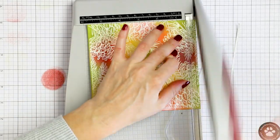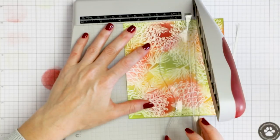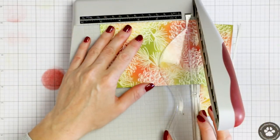Next I'm trimming this background down to size. I want it to be just short of 4 by 5 and a quarter inches.